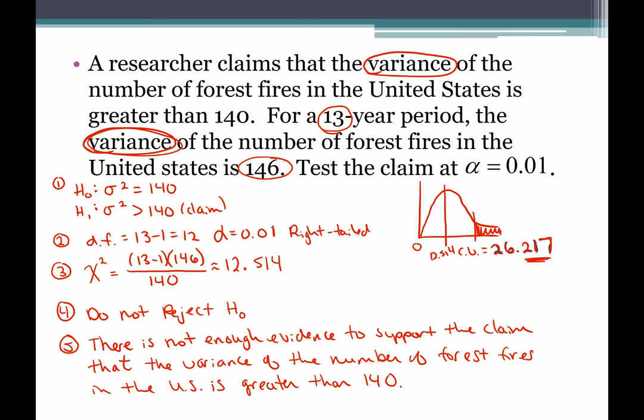Step five: write the summary statement. We did not reject the null hypothesis and our claim was in the alternative. So we say: there is not enough evidence to support the claim. Then just restate your claim. This is our traditional five-step method. Focus specifically on finding those critical values in Table G.